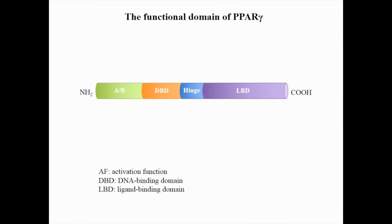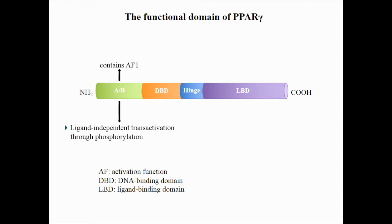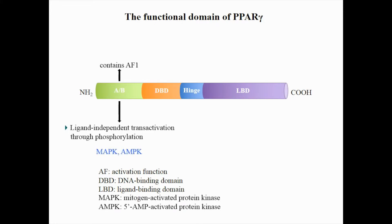The key role of this article: PPAR gamma is a ligand-activated nuclear receptor which is composed of four different domains. The N-terminal AB domain contains activation function 1, which is responsible for ligand-independent transactivation through phosphorylation. This phosphorylation decreases transcriptional activity of PPAR gamma by MAPK and AMPK to repress ligand-dependent effects.